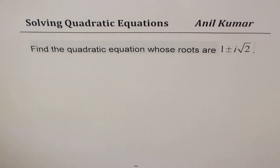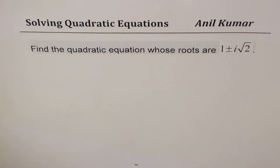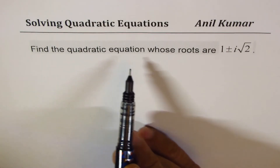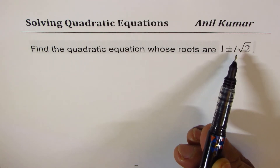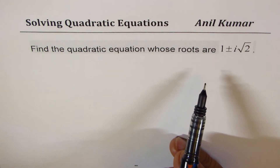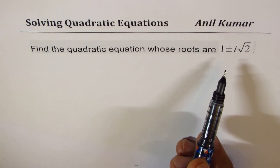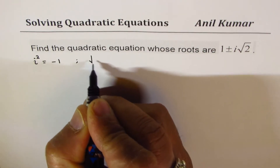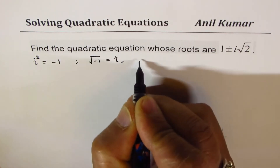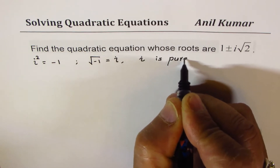I'm Anil Kumar. Let me thank all my subscribers for posting excellent questions. It's time to review for the final exam. Here is an excellent question from one of my subscribers who wants to understand how to write a quadratic equation when the roots are given, especially when we are given complex roots. The question is: find the quadratic equation whose roots are 1 plus i√2. Note that i² = −1, so i is a pure imaginary number.